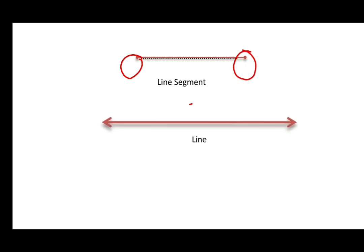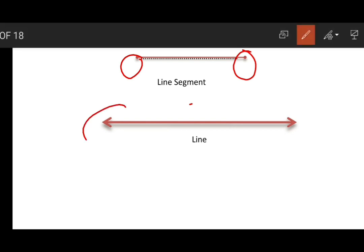In this case, you can see there is an arrow mark on both the ends. Can you see this? These arrows signify that the line can extend unendingly on both the ends.